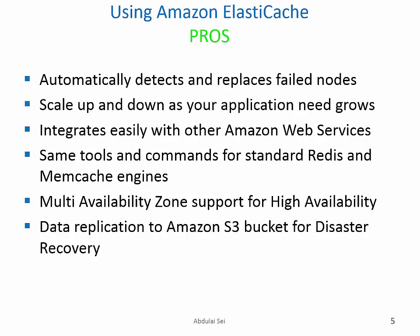There are advantages and disadvantages of using this technology. Some advantages of using Amazon ElastiCache: the technology automatically detects and replaces failed nodes, it can scale up and scale down as your application needs grow, and it integrates easily with other Amazon Web Services. You use the same tools and commands for Standard, Redis, and Memcached engines. You also inherit some of the availability and disaster recovery capabilities of Amazon Web Services.